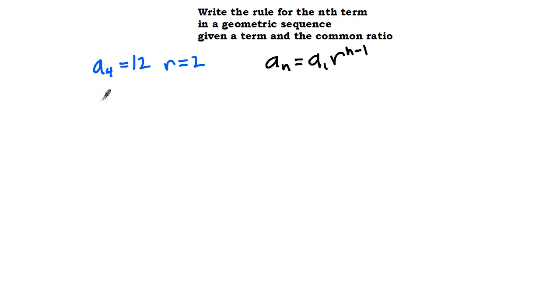We're going to start with a sub 4 equals, and we'll pretend like a sub 4 is a sub n. So it equals a sub 1, which we don't know, and then r, which we do know, times 2 to the power of n minus 1.